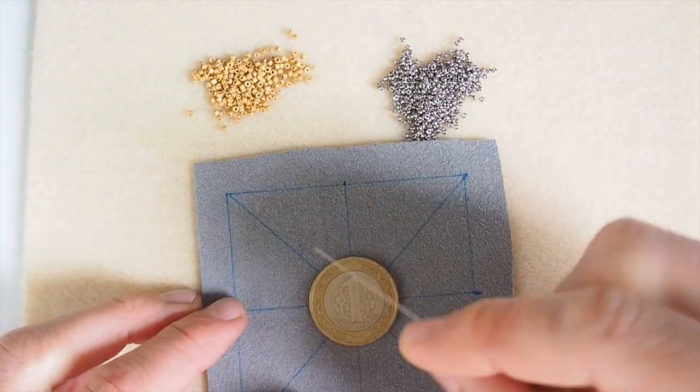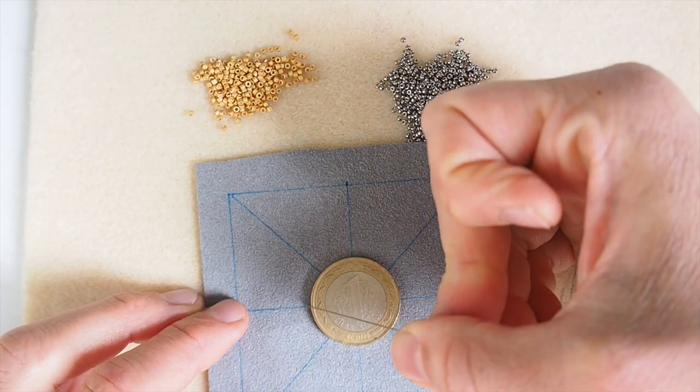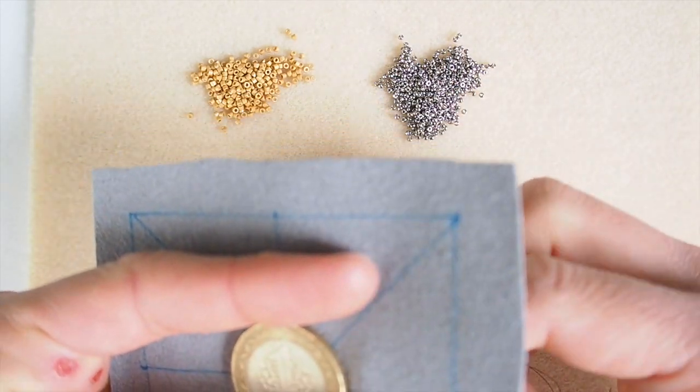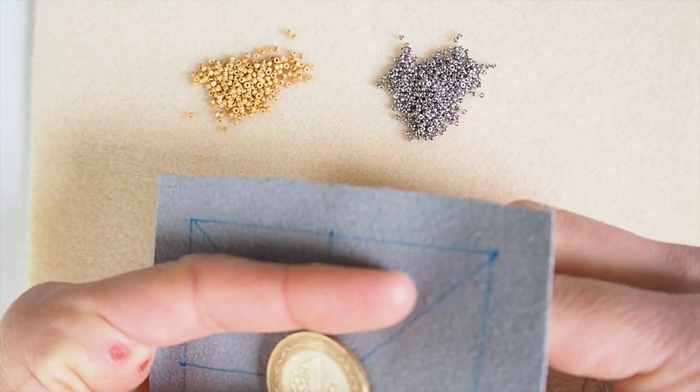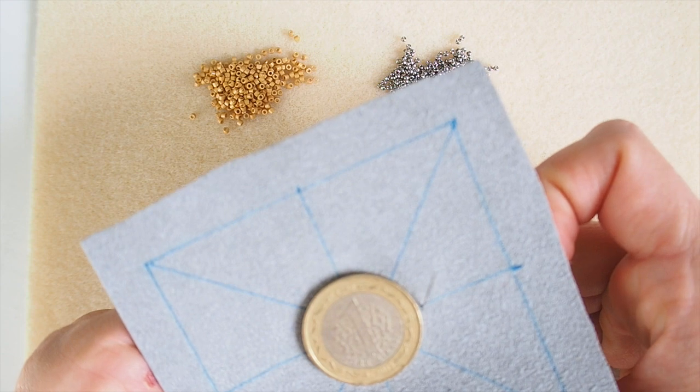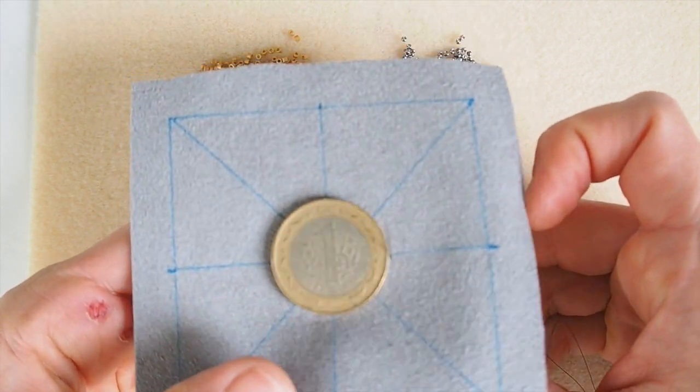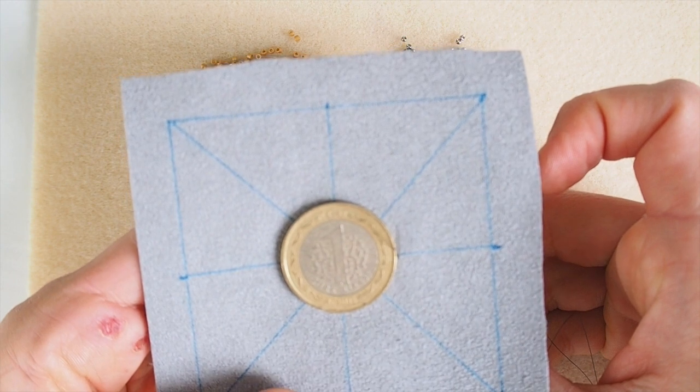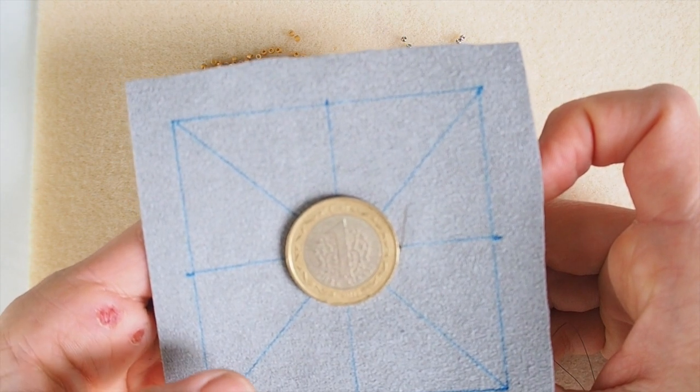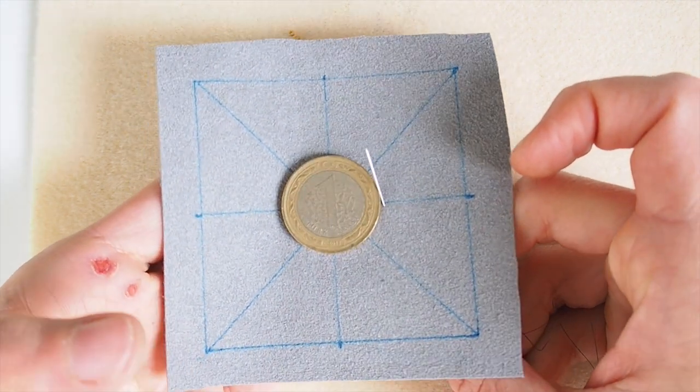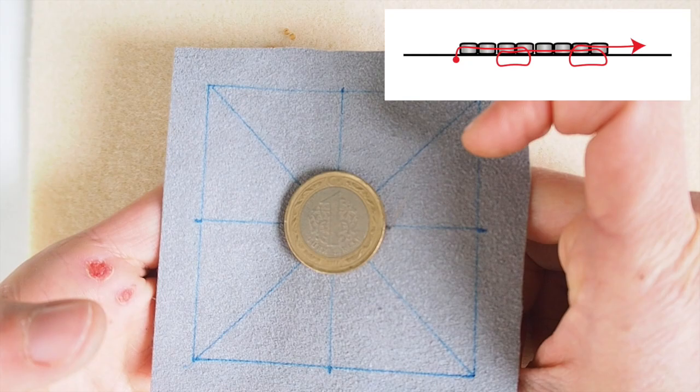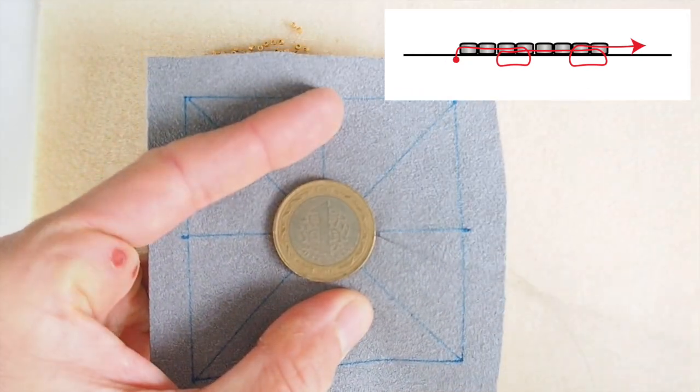First, we are going to attach a row of beads, delica beads all around the coin. By the way, this kind of bezeling the focal component works perfectly well with all kinds of flatback cabochons. It does not have to be a coin. So if you will work with for example a Czech cabochon in the future which has a flatback or a semi precious stone, then you can use the same method. Now, I'm beading through the foundation from the back to the front in about like half a millimeter from the edge of the coin, not directly at the edge.